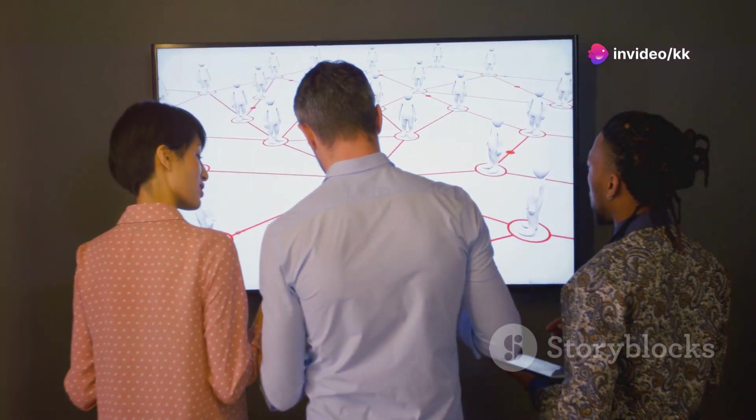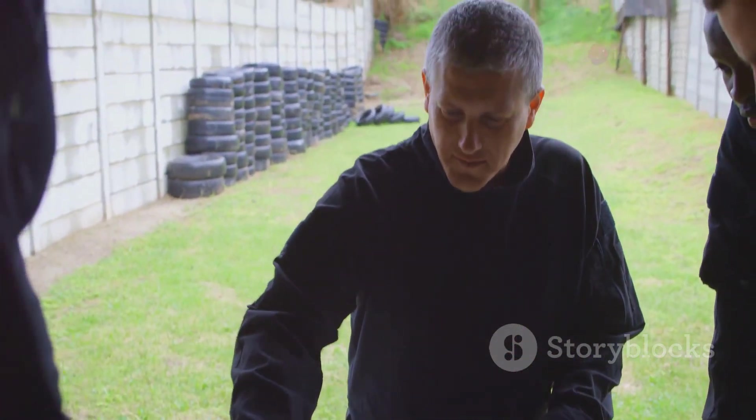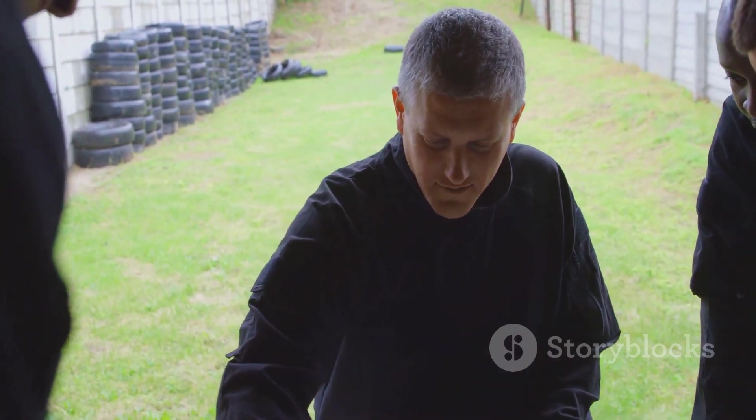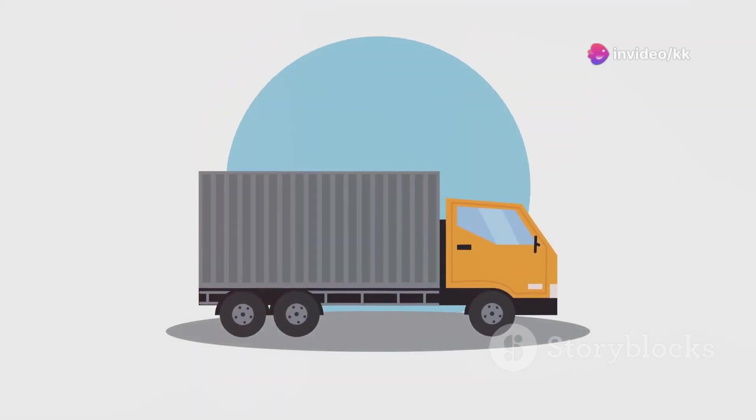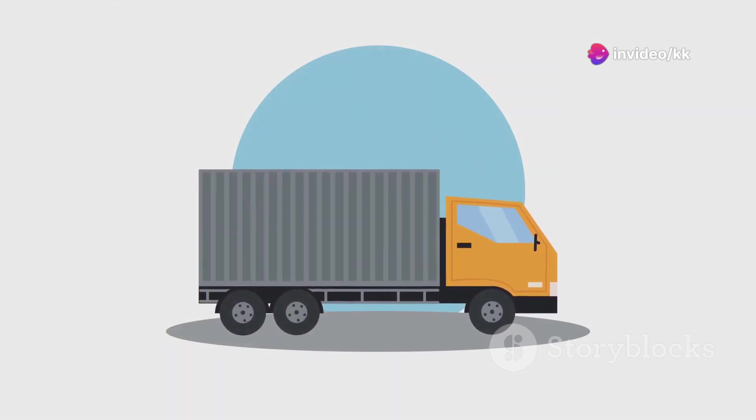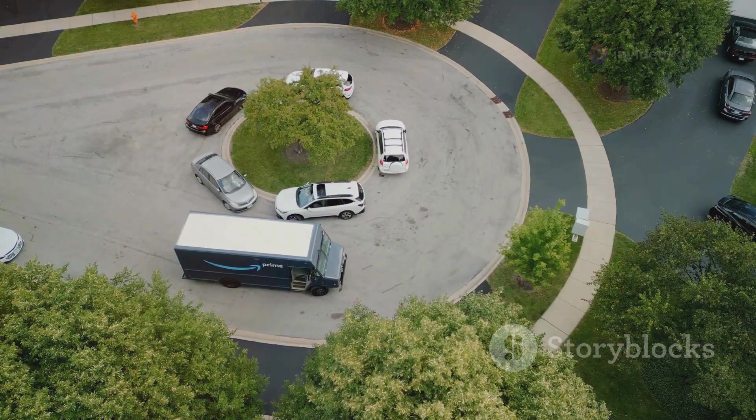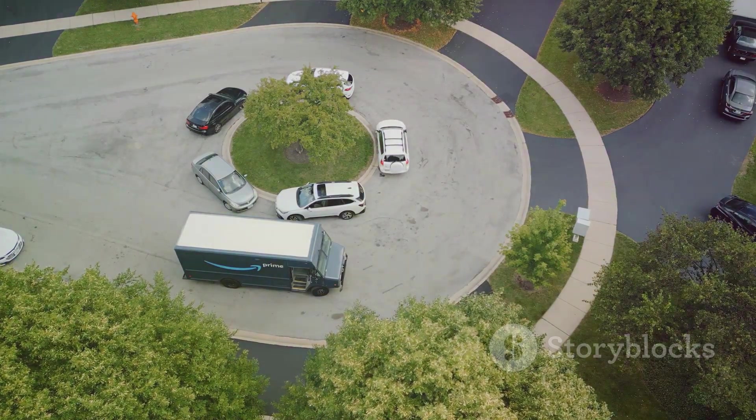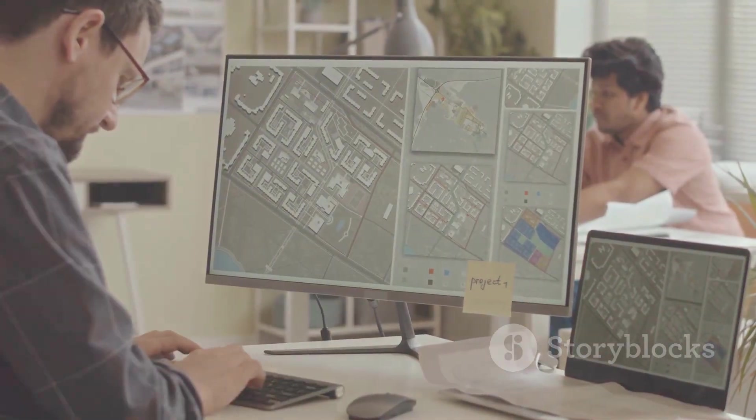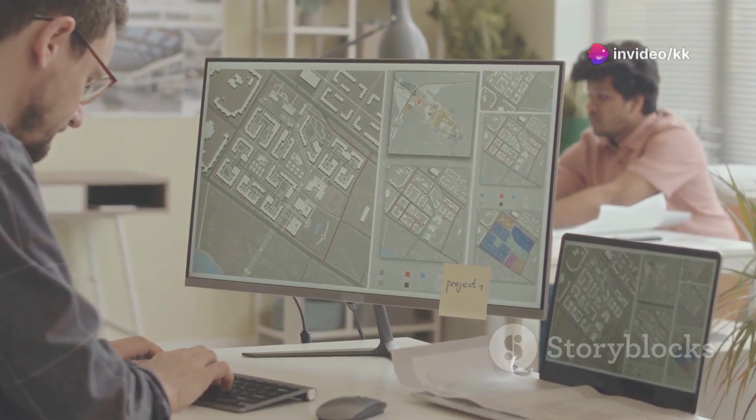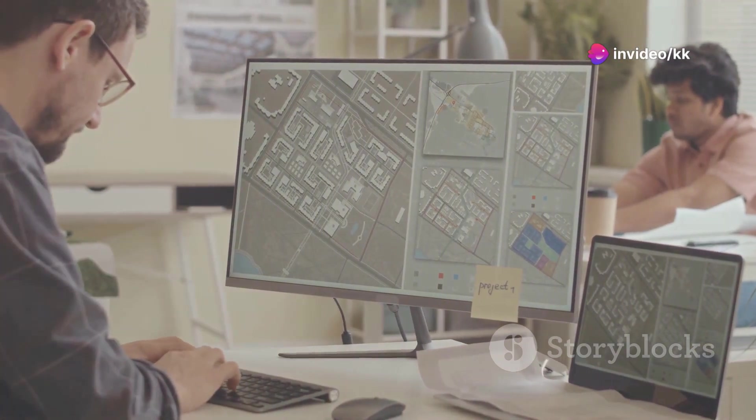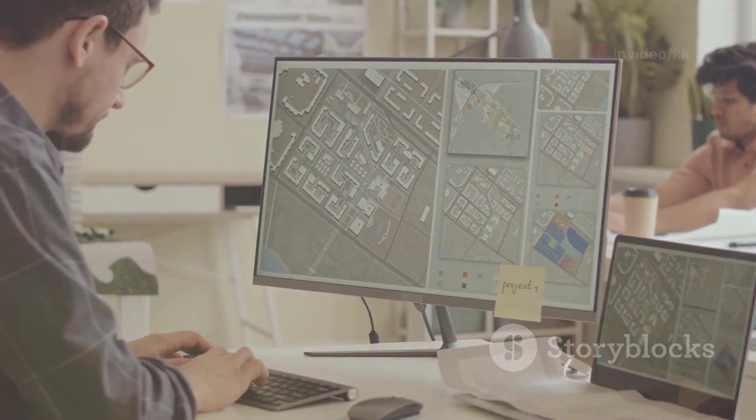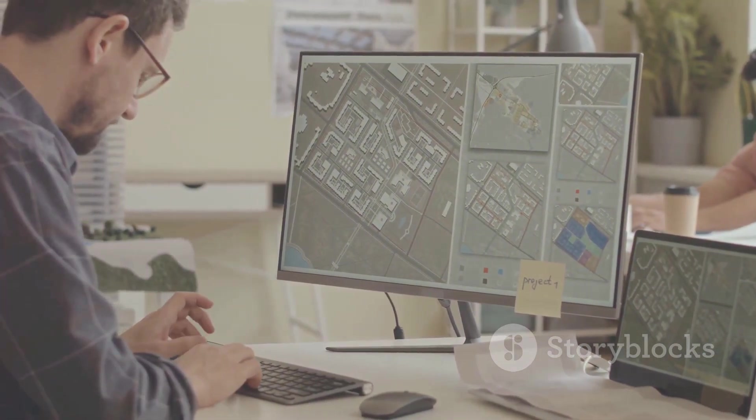Whether it's optimizing a supply chain, scheduling flights or even solving intricate scientific problems, the distinction between solving and verifying remains crucial. Consider a delivery company that needs to find the most efficient route for its trucks to deliver packages to hundreds of addresses. This problem, known as the travelling salesman problem, is notoriously difficult to solve optimally. Determining the absolute shortest route is a computationally intensive task. It involves evaluating a vast number of possible routes to find the one with the minimum total distance, which can be overwhelming for even the most powerful computers.